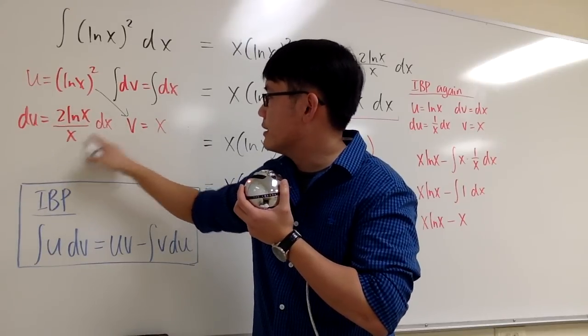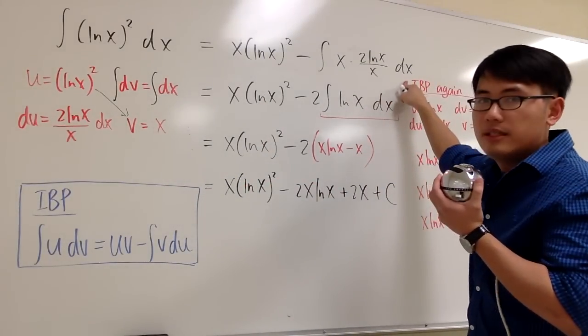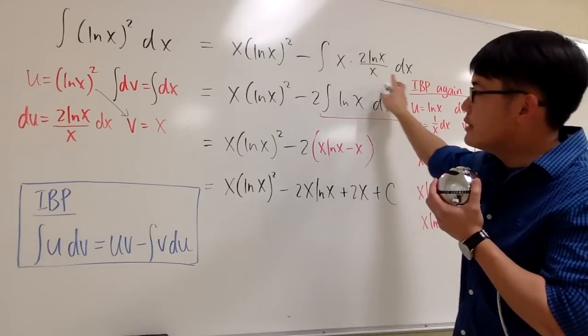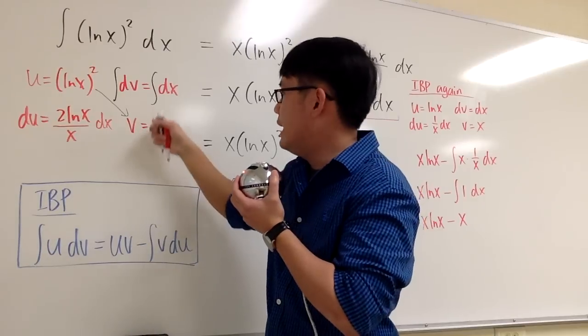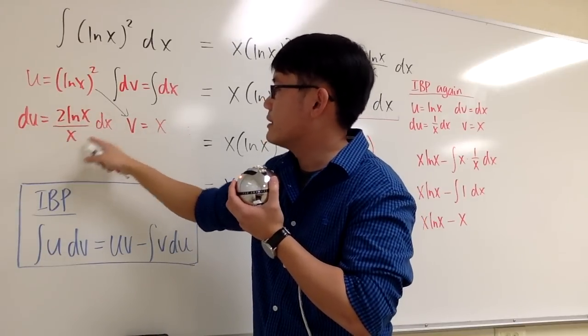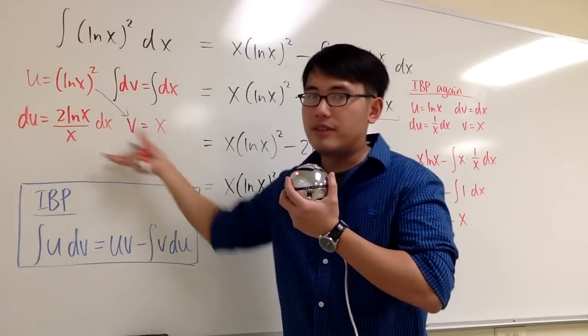So this right here represents the du. And notice that this integral is just the product of the second row that we have. x times 2 ln x over x dx. It's just a product of the second row.